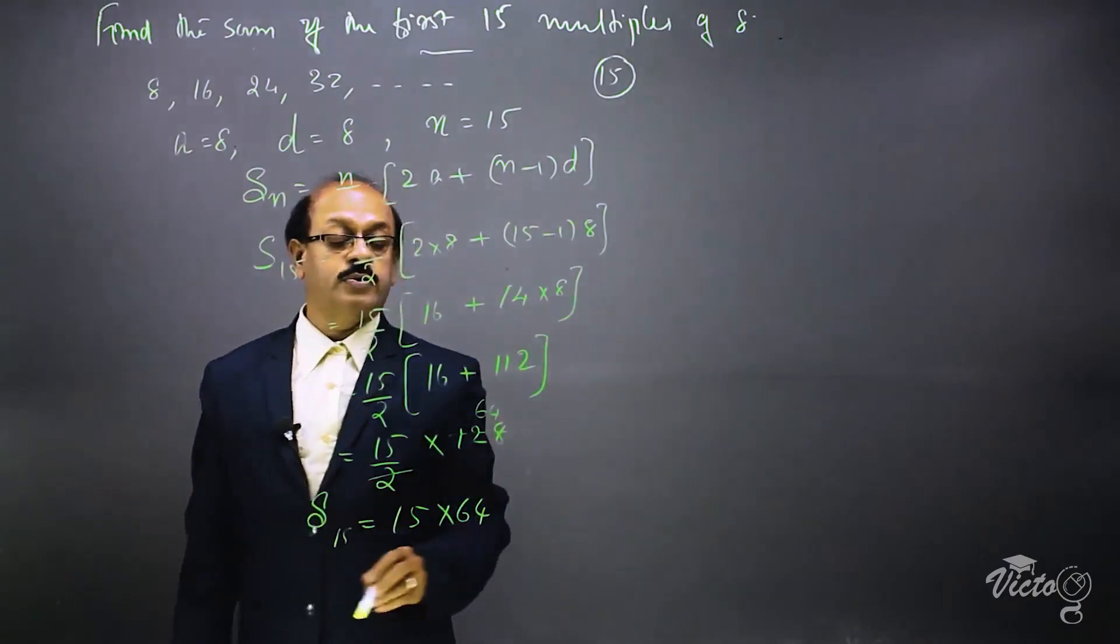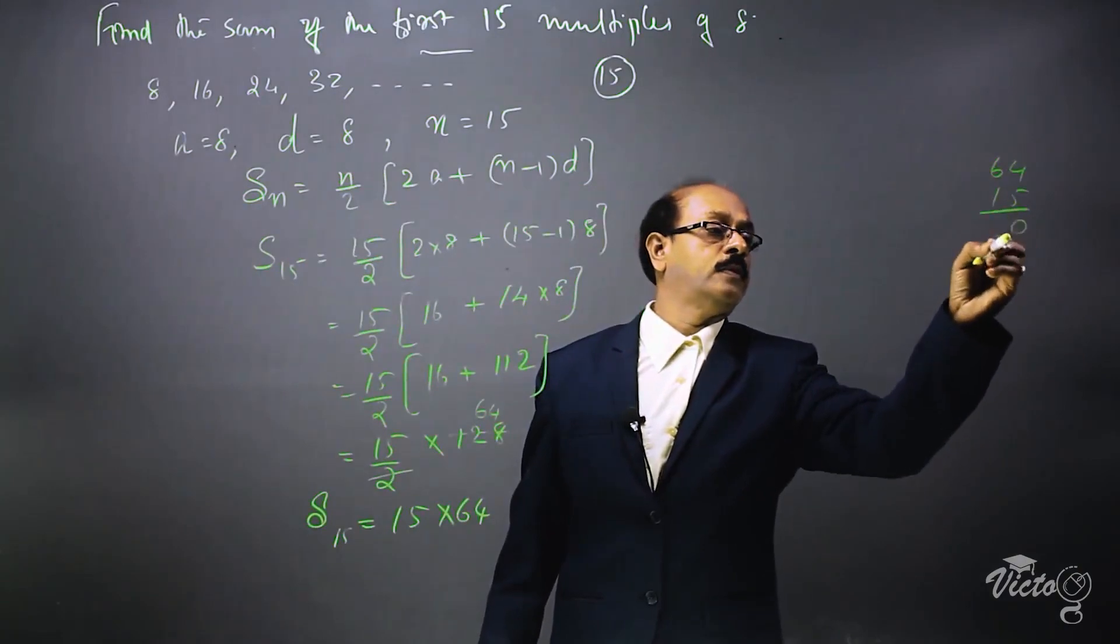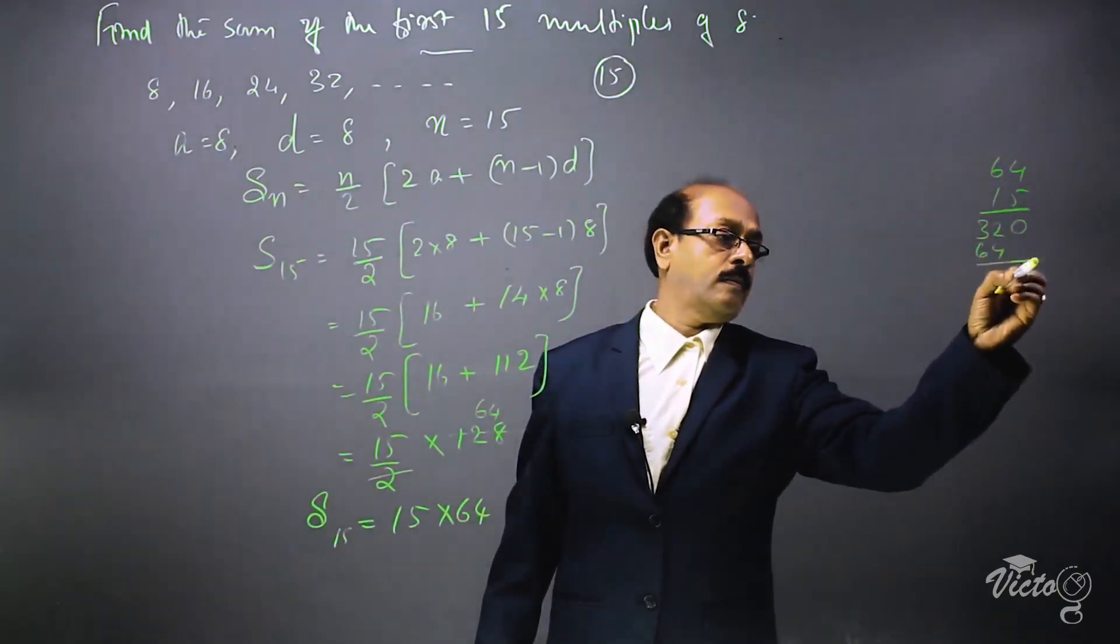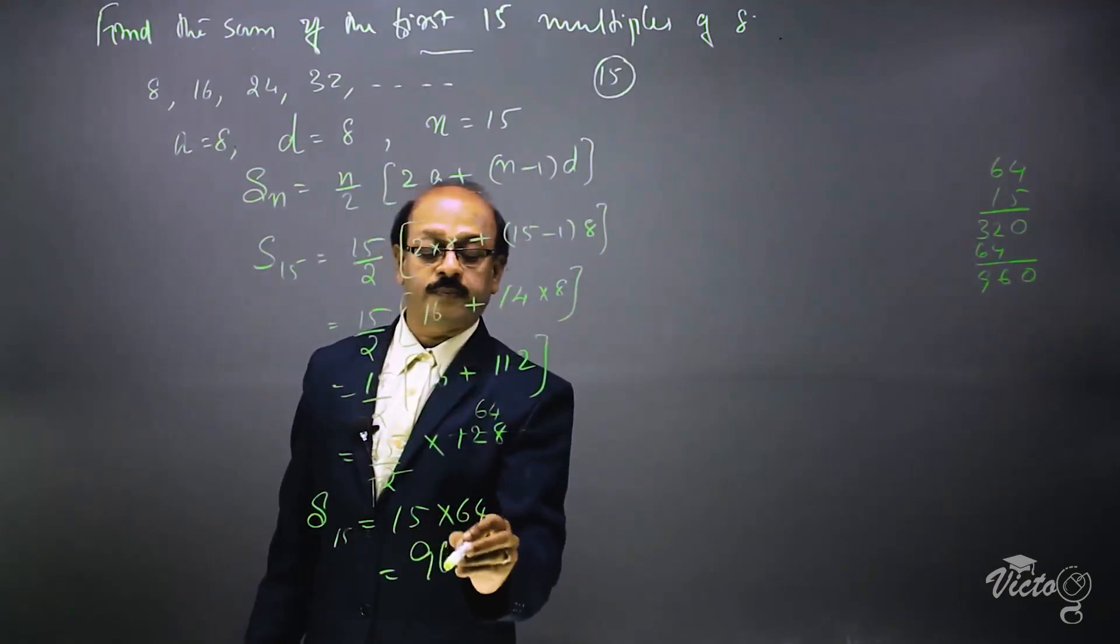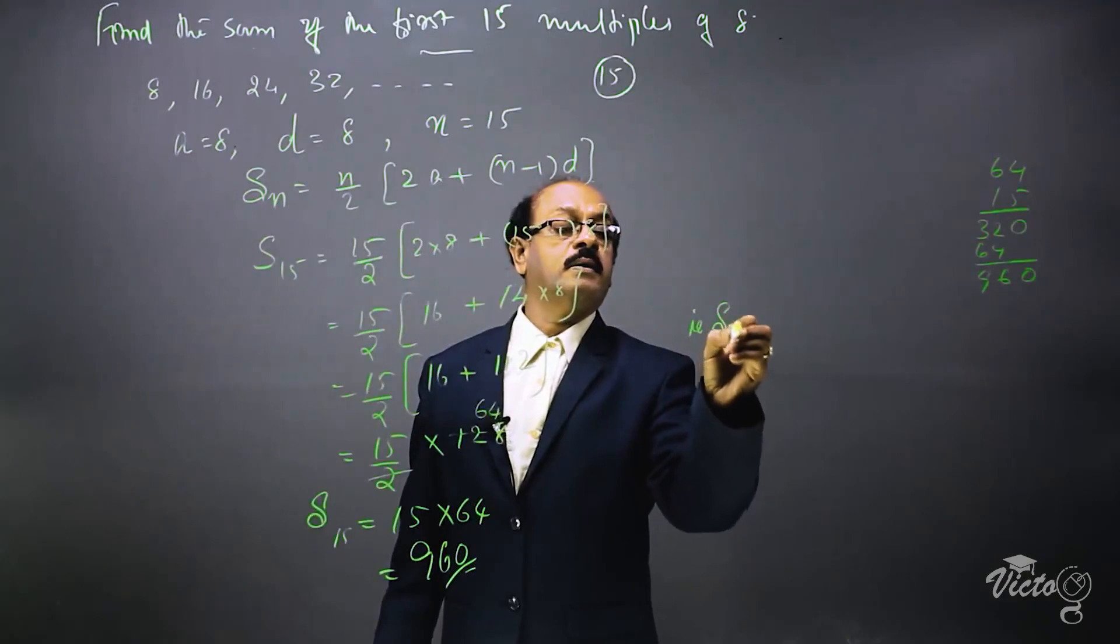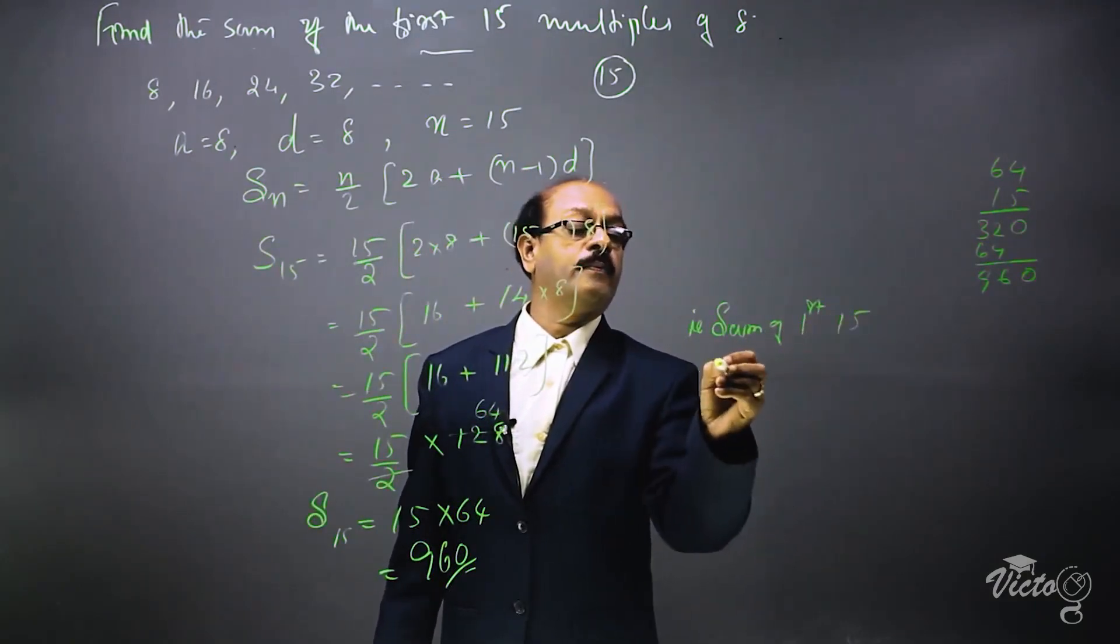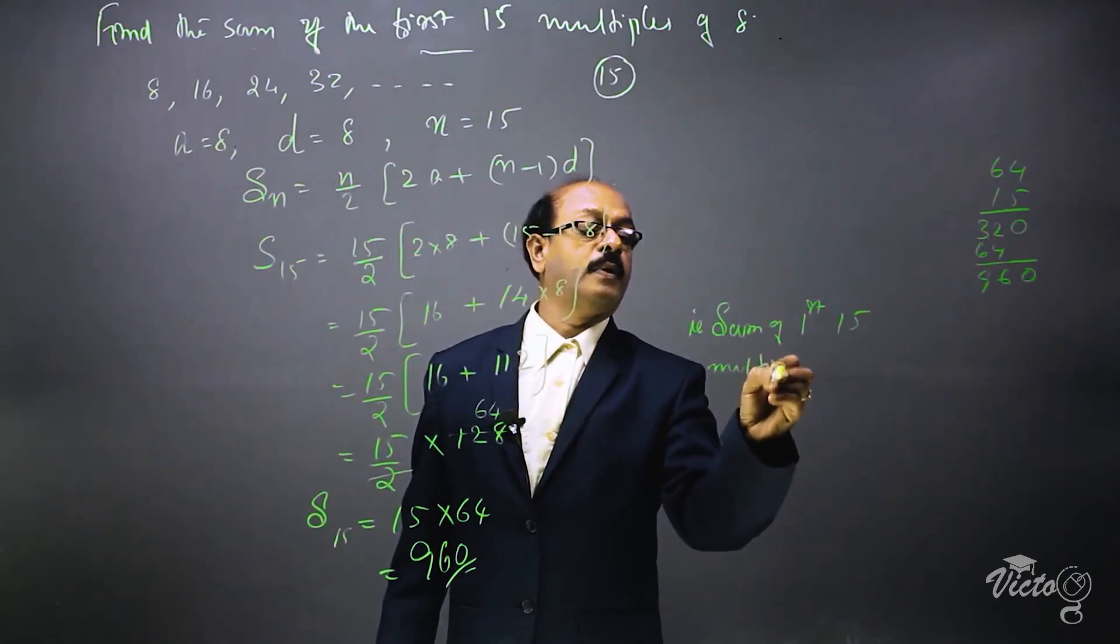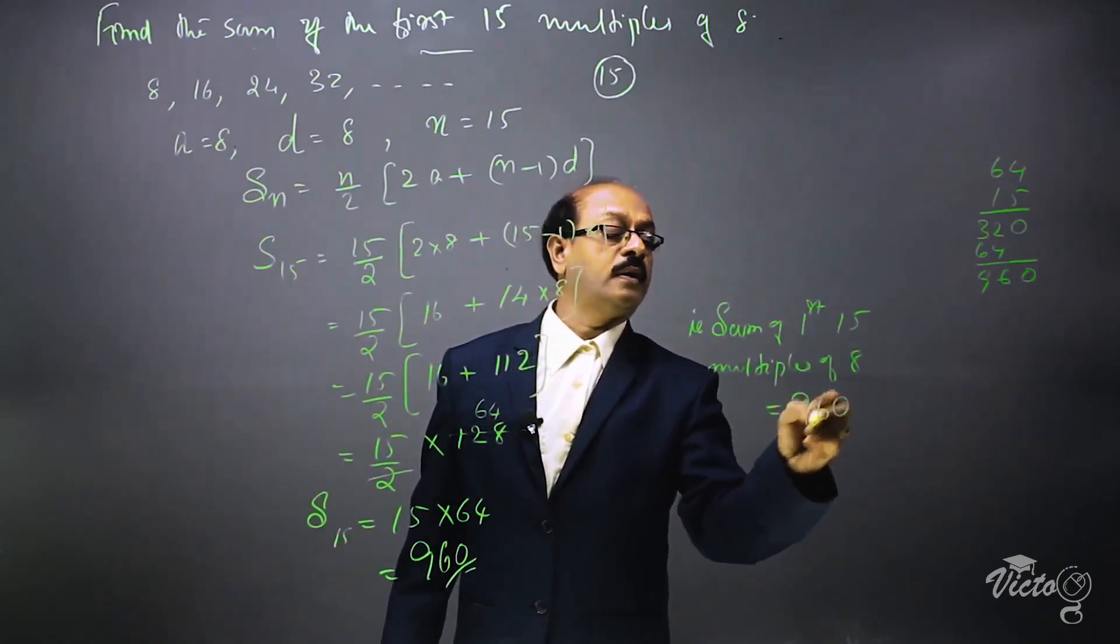S_15 is equal to 64 into 15, which equals 960. 960 is the answer. The sum of the first 15 multiples of 8 is equal to 960.